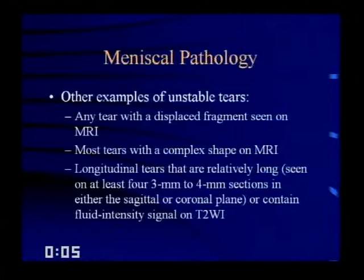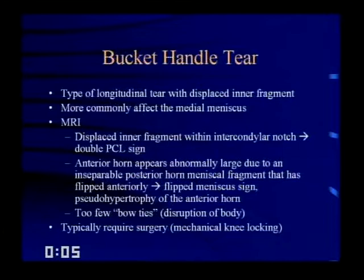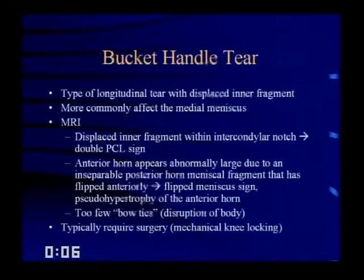The bucket handle tear is a type of longitudinal tear with a displaced inner fragment, more commonly affecting the medial meniscus on MRI. Signs to look for include a displaced inner fragment within the intercondylar notch — the double PCL sign — an abnormally large anterior horn due to a posterior horn fragment flipped anteriorly (the flipped meniscal sign or pseudohypertrophy of the anterior horn), and too few bow ties due to disruption of the body.